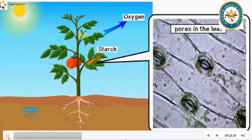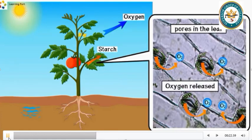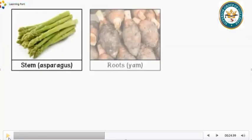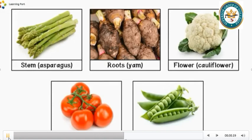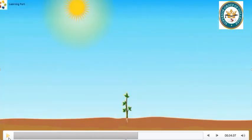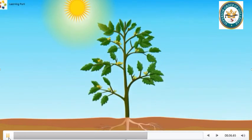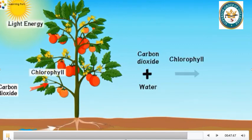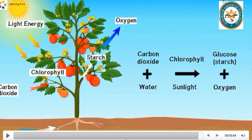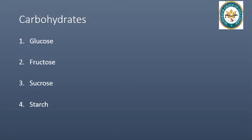Oxygen is released from small pores in the environment called stomata. The starch is stored in the stem, roots, floor, and seeds. These stored starches are used in growth and maintenance, as well as in flowers, fruits, and seeds. Looking at the equation, carbon dioxide plus water in the presence of chlorophyll and sunlight produces carbohydrates and oxygen. Carbohydrates can be in the form of glucose, fructose, sucrose, and starch.